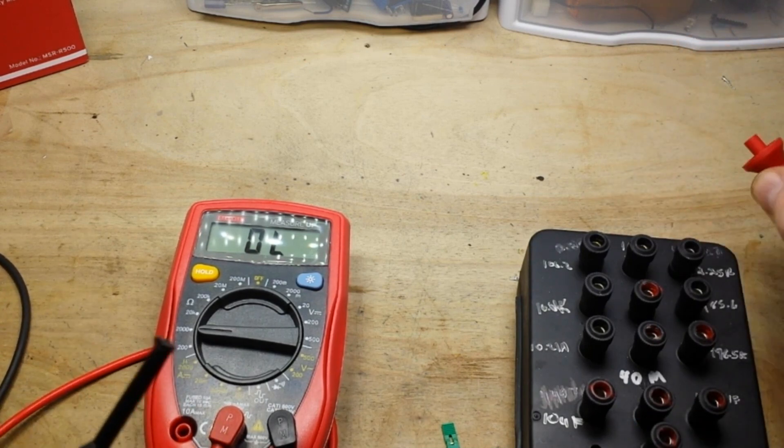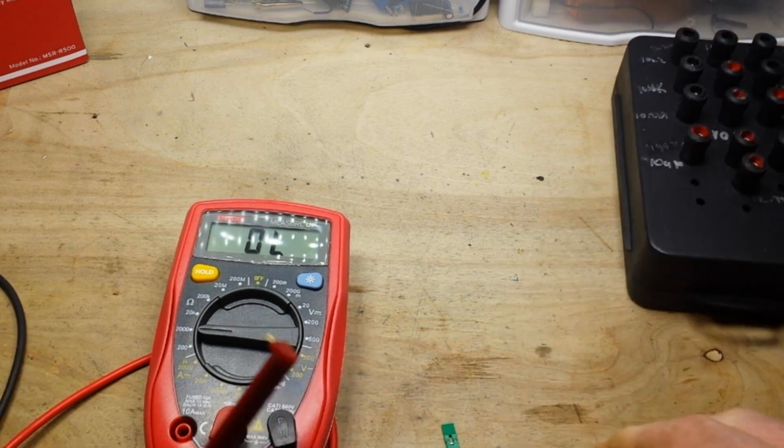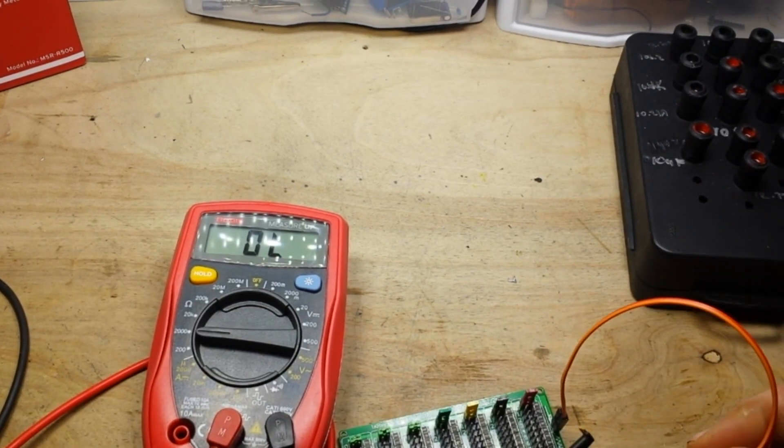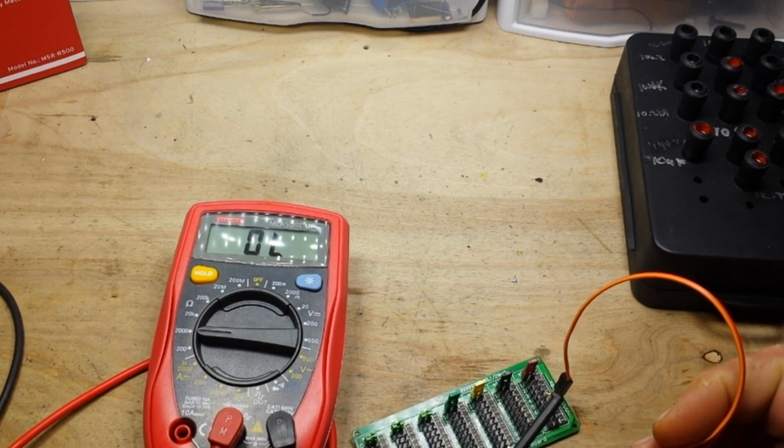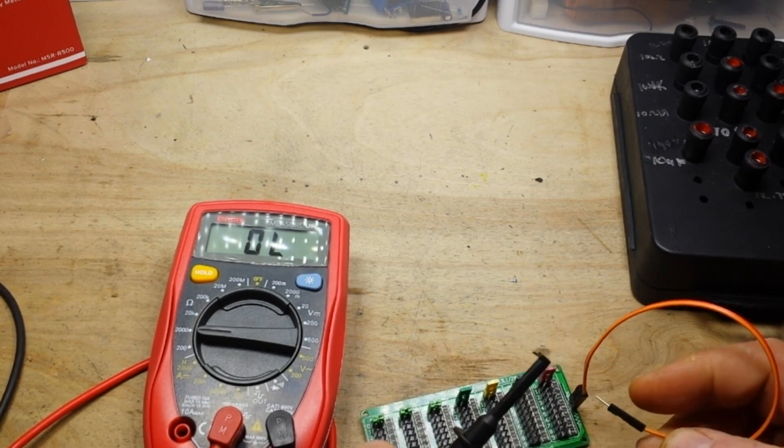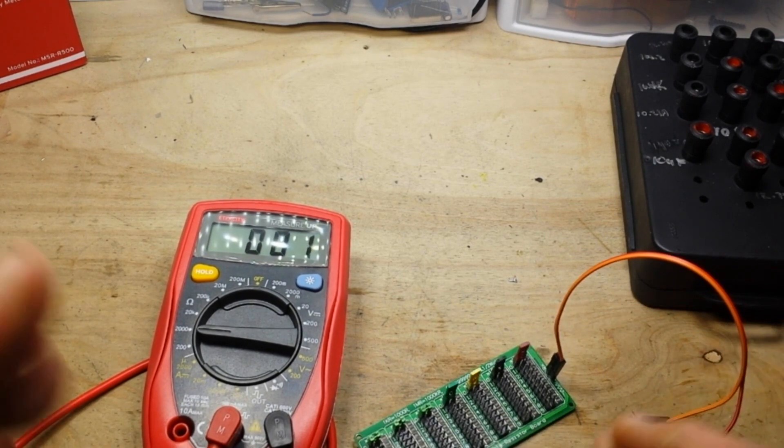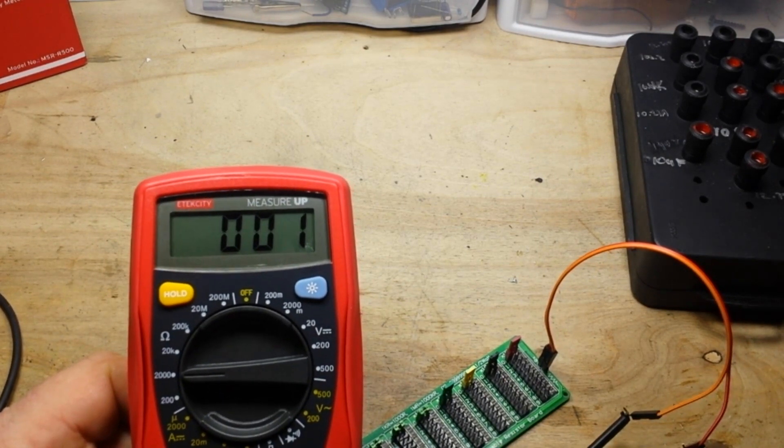I basically got this for a cheap meter to throw in the car. I don't check a lot of capacitors in the car, but I do check a lot of resistances. Let's check some more resistances with this little breakout board. Again, where did I get it? I got it off eBay. Just put in surface mount resistor decade box.